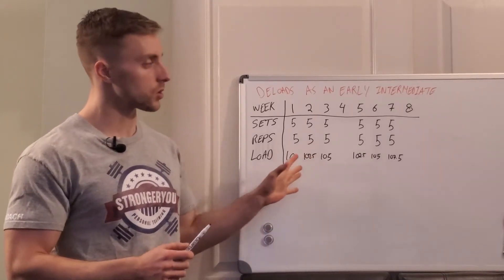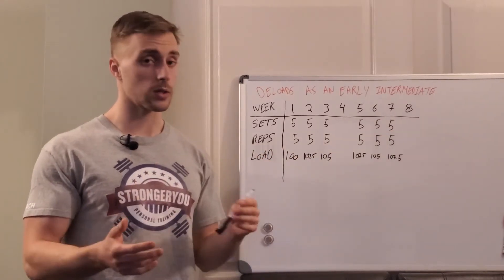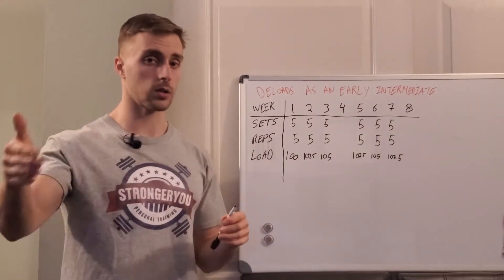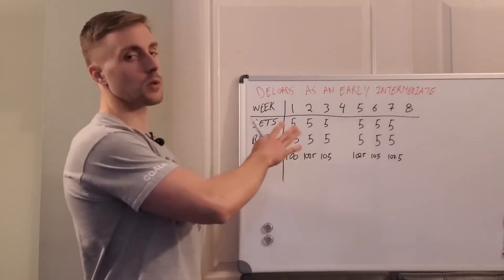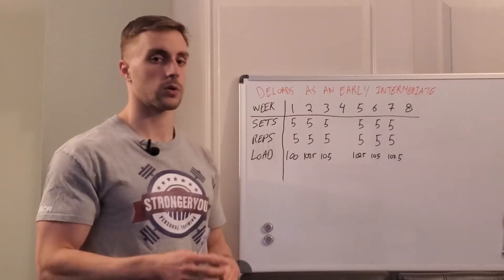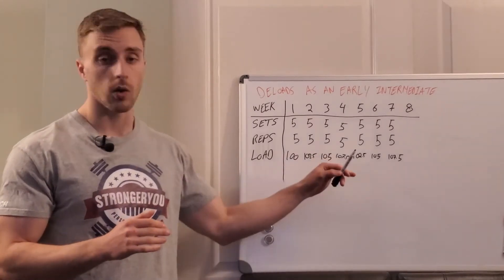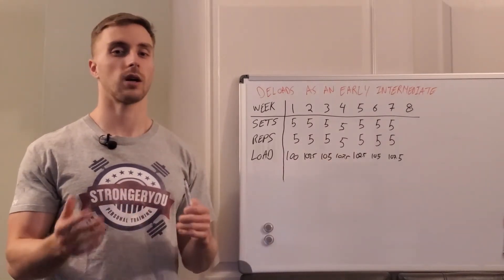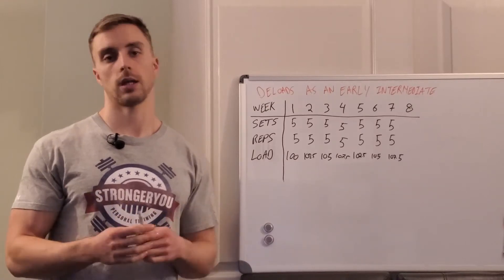So like I mentioned, traditionally your workload is going to stay fairly similar and you're just working on increasing your load on the bar periodically. So taking into account just a rough guess here, five by five with 100 pounds works out to about 2,500 pounds of volume. If we do a five by five with 107.5 it's going to work out to roughly about 2,700 pounds of volume.